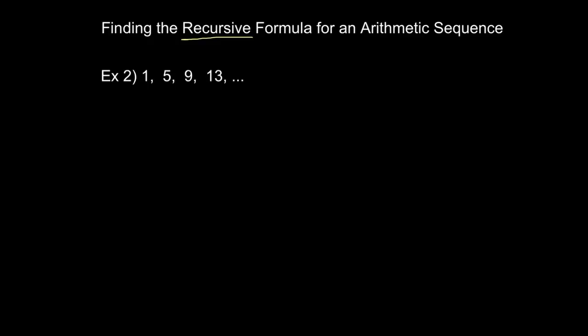The fundamental idea behind a recursive formula is that each term is defined in terms of previous terms. What this basically means is that with a recursive formula, if I want to know the ninth term, I first have to know the eighth term. To know the eighth term I need to know the seventh, and to know the seventh I need to know the sixth, and so on all the way back to the first term. So in some sense a recursive formula is weaker than an explicit formula.